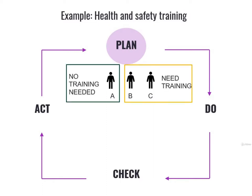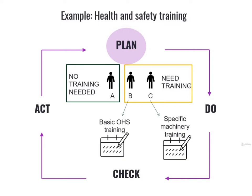Worker A doesn't need any training. Worker B and C need training. To be specific, Worker B needs basic OHS training and Worker C needs specific training on the use of heavy machinery. So in this step, we will have to make an appointment for Worker B and an appointment for Worker C. Worker B will attend the basic OHS training on the 5th of July, while Worker C will attend the heavy machinery course on the 1st of September.